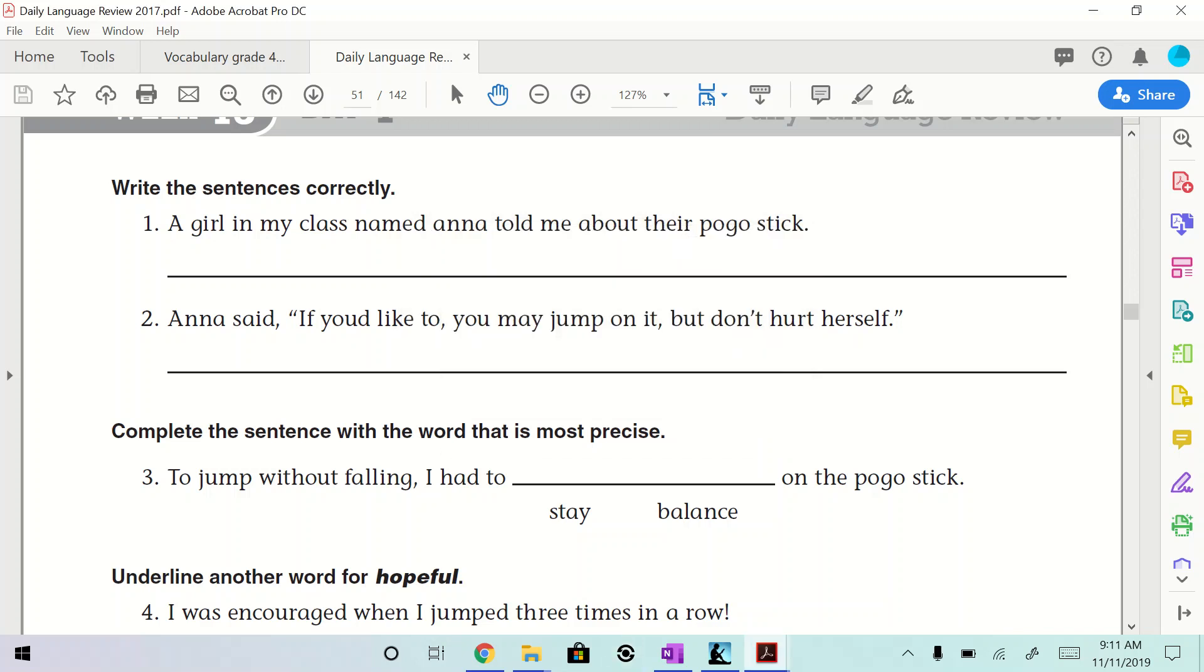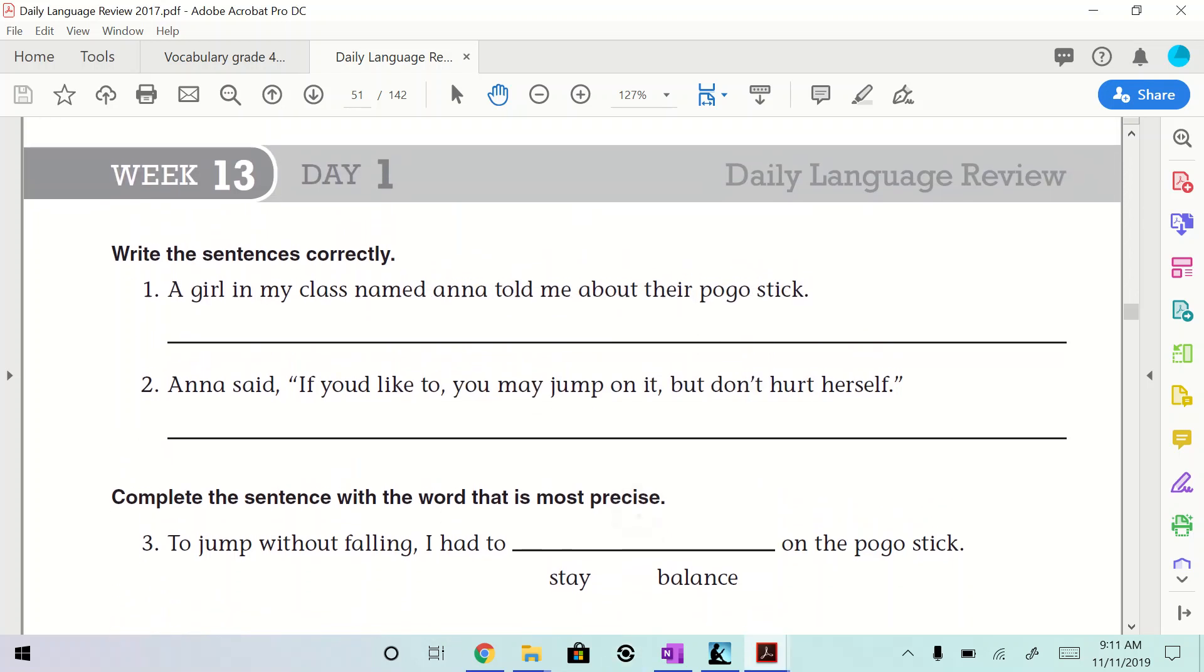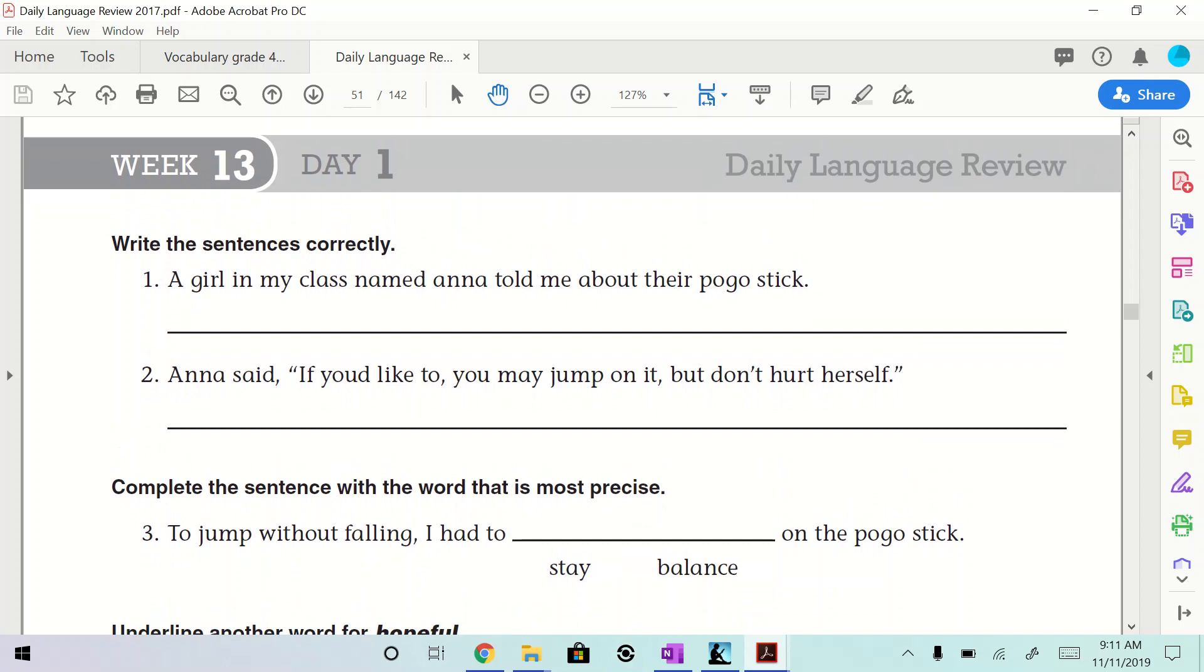Alright, so what do we got here? We got week 13. It's a Monday. We're supposed to get a big snowstorm coming in. How many of you believe that's going to happen? Whatever.